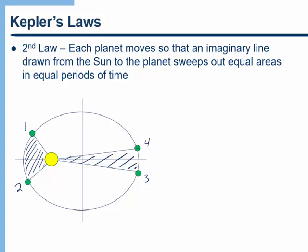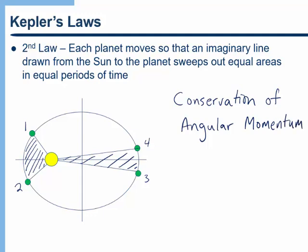Now again Kepler didn't understand why these laws worked but he just found that they fit the data. Later on in this course we'll talk about conservation of angular momentum and we'll see that once we understand the concept of conservation of angular momentum we can better understand where Kepler's second law comes from.